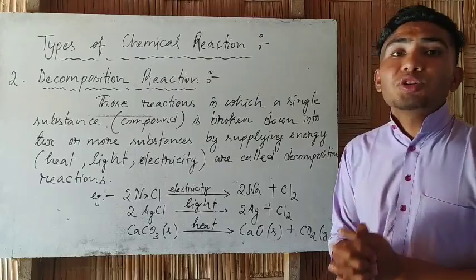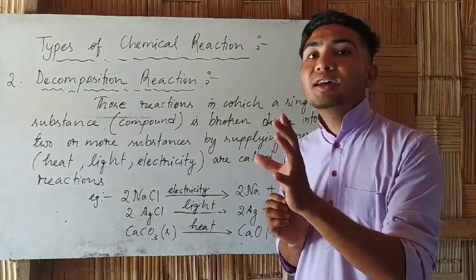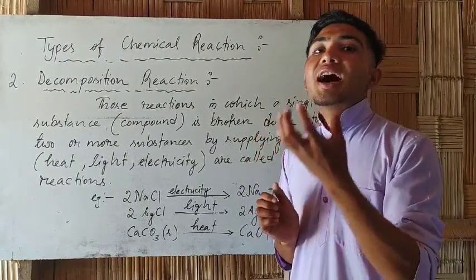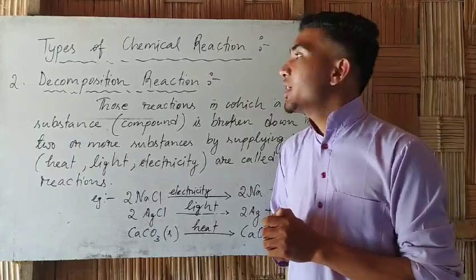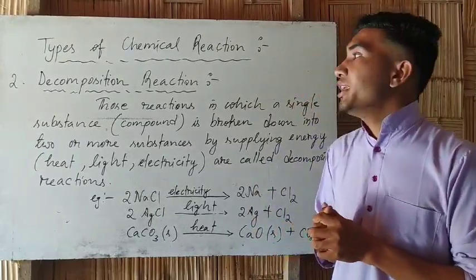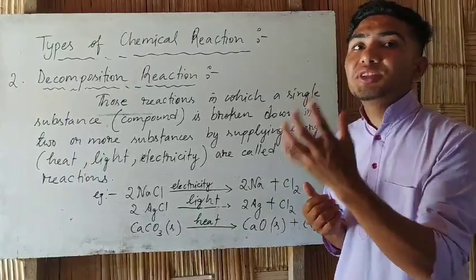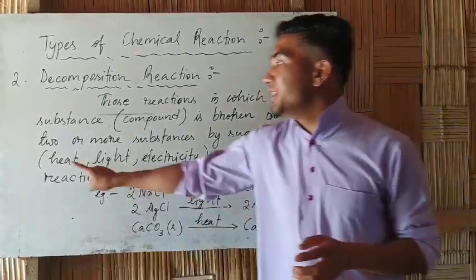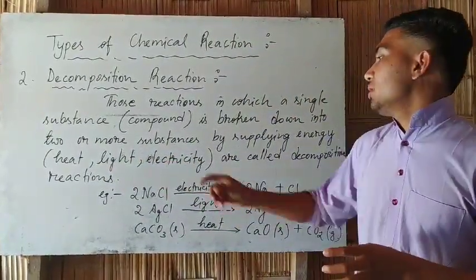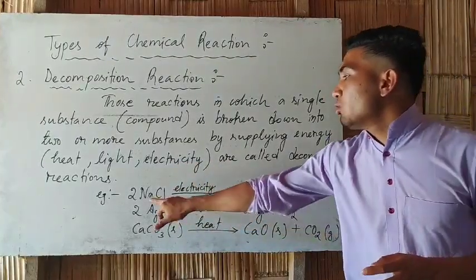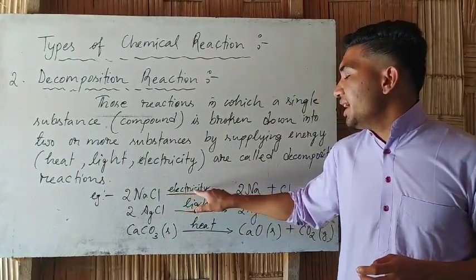Decomposition Reaction is a reaction in which a single substance is broken down into two or more substances by supplying energy — light energy or electrical energy. This is called Decomposition Reaction. The single substance is broken down by energy. The energy can be heat, light, electricity, or electrical energy.